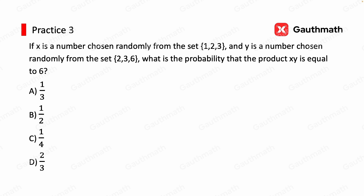Practice 3: probability involving algebra. If x is a number chosen randomly from the set {1, 2, 3} and y is a number chosen randomly from the set {2, 3, 6}, what is the probability that the product x·y equals 6? This is a more complicated problem. Whenever you're feeling confused, draw something — a graph, a table, anything that helps you visualize. This time I'll use a table.